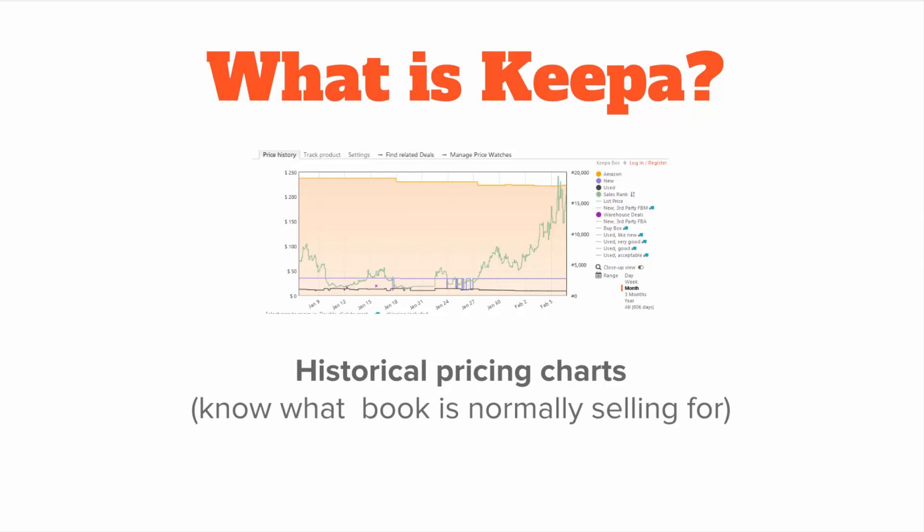If you don't know what KIPA is, let me explain it briefly. KIPA is extremely powerful — no matter what you do on Amazon, you're going to need to know what KIPA is. It's actually a lot of things, but it's two major things. It is historical pricing charts where they give you essentially a graph for virtually every single book on Amazon — actually almost every product period on Amazon — showing you its historical price. What was it last month? What was it a year ago? What are the trends? Is it on an upward or downward trend? Is this item artificially priced high right now?